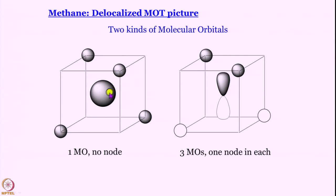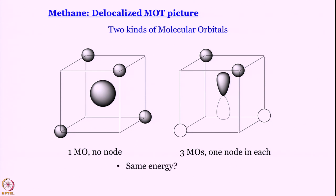We now have two kinds of MOs: one involving the 2s orbital and three involving the 2px, 2py, and 2pz orbitals. The first kind has no node while the second has one node — the node already present in the p orbital. Should they have the same energy? From elementary chemistry, we expect different energies because energy generally increases with the number of nodes. What is the experimental evidence that there are indeed two kinds of MOs?